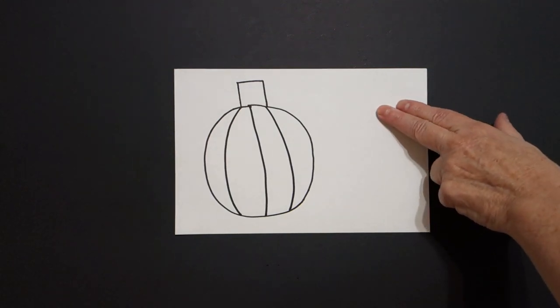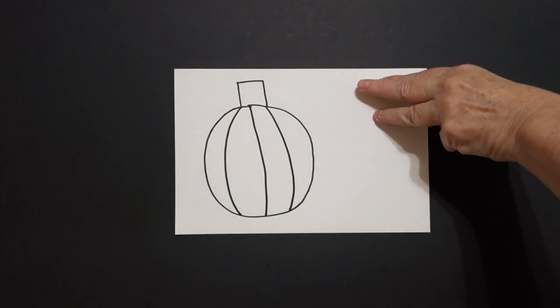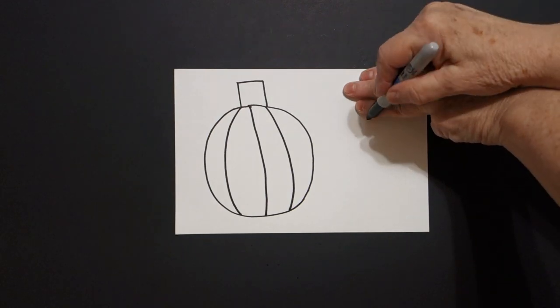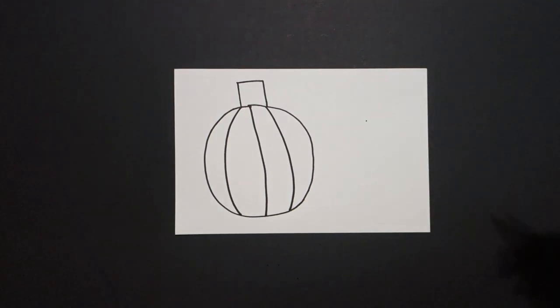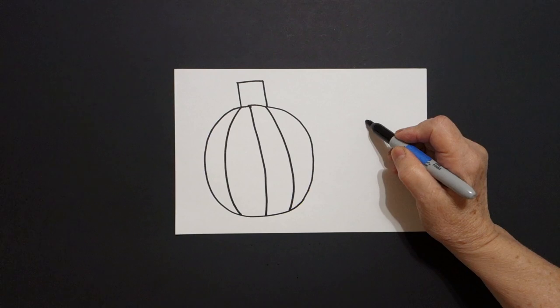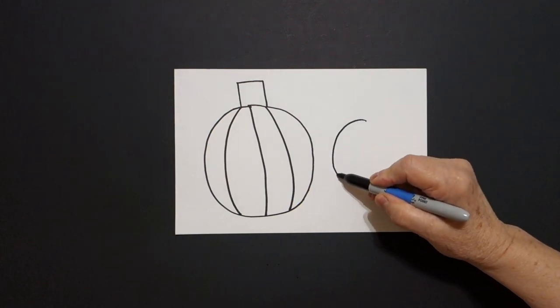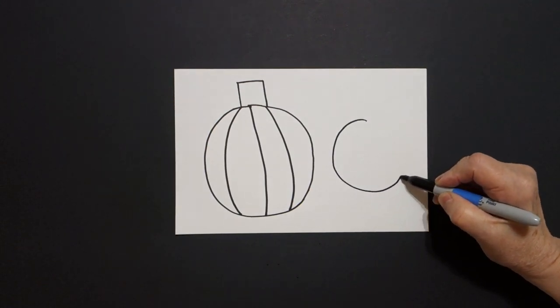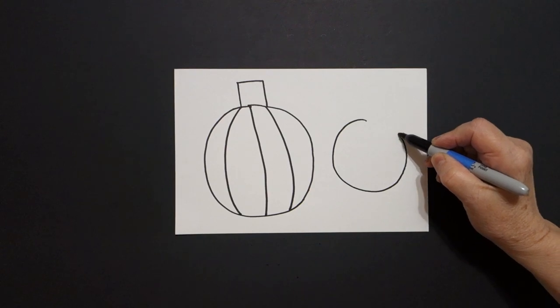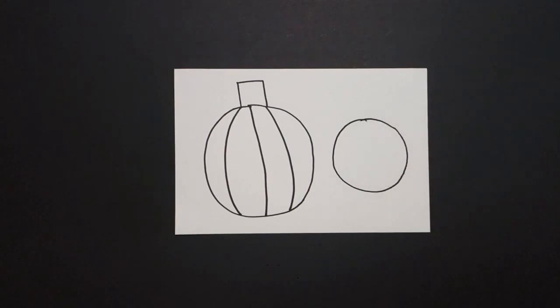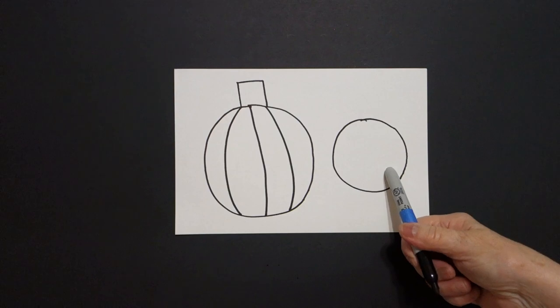Now I come over here on the right and I put three fingers and put a dot. And from that dot, I'm going to draw a curved line down, around, up, and connect. That's a little circle.